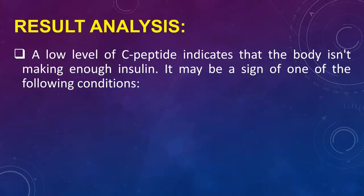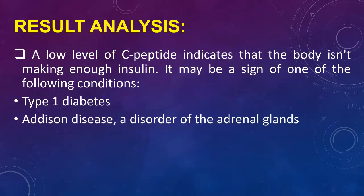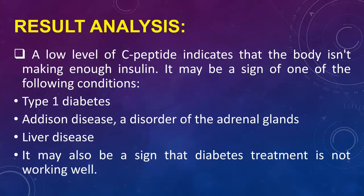A low level of C-peptide indicates that the body isn't making enough insulin. It may be a sign of type 1 diabetes, Addison disease (a disorder of the adrenal glands), or liver disease. It may also indicate that diabetes treatment is not working well.